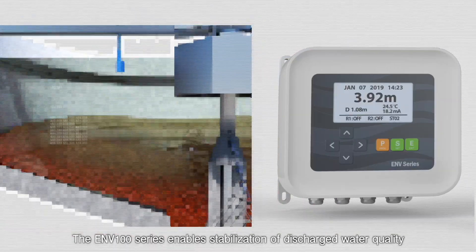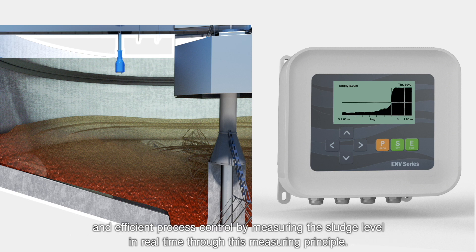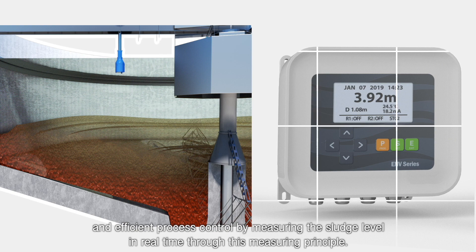The ENV100 Series enables stabilization of discharged water quality and efficient process control by measuring the sludge level in real time through this measuring principle.